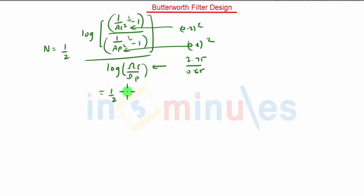So half log of 24 upon 0.5625 divided by log of 2.75 upon 0.65. This gives the answer as 1.3. As it is greater number than 1 we will take capital N as 2.